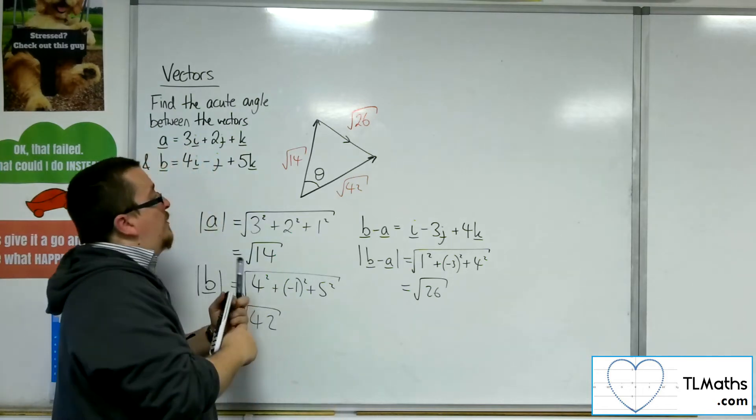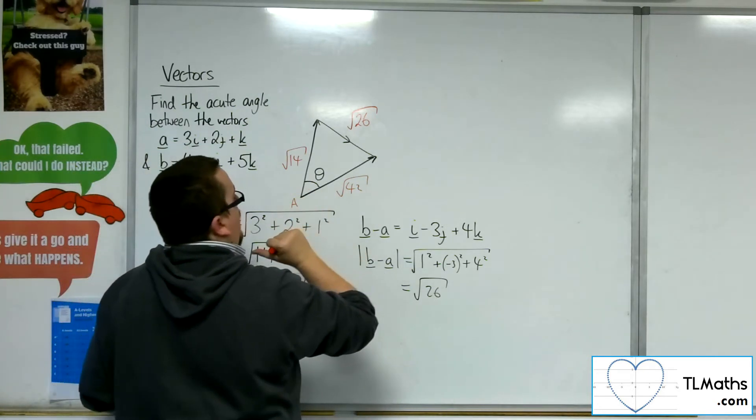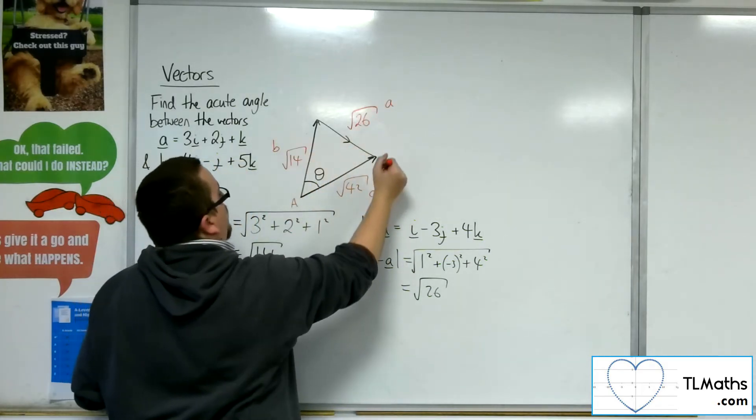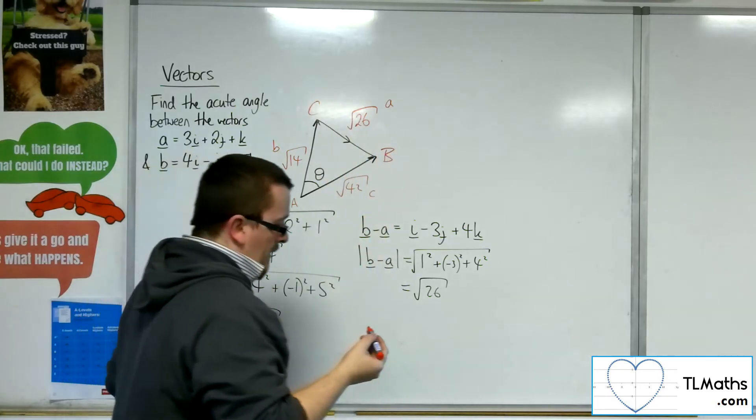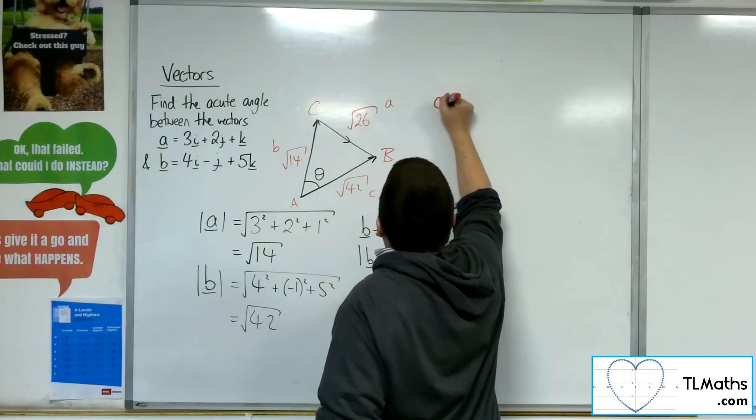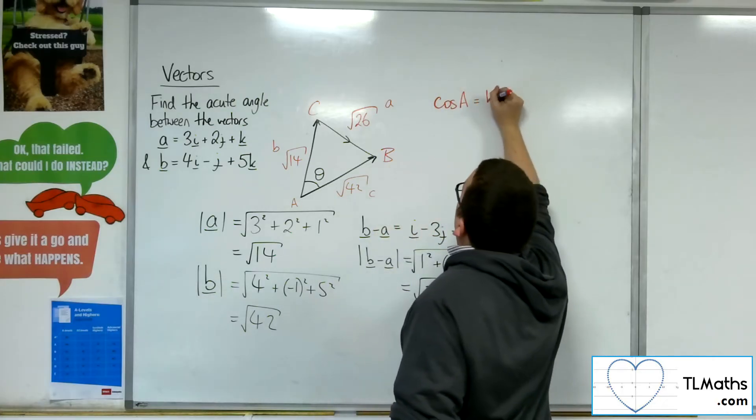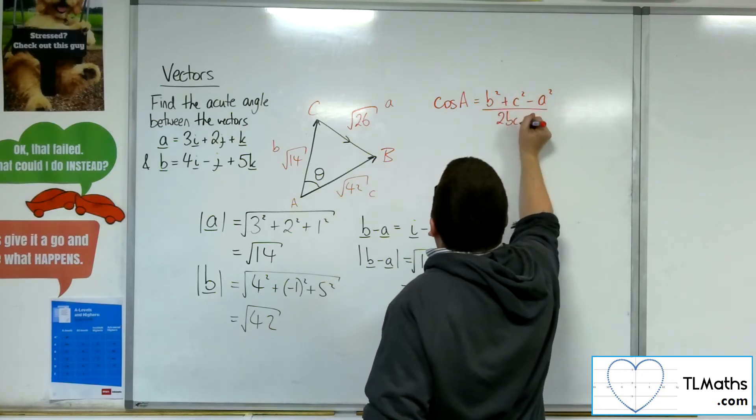So now if I called that angle A, then that could be little a, then that could be little b, that could be little c, capital C, capital B. So cosine of the angle is going to be equal to B squared plus C squared minus A squared over 2BC.